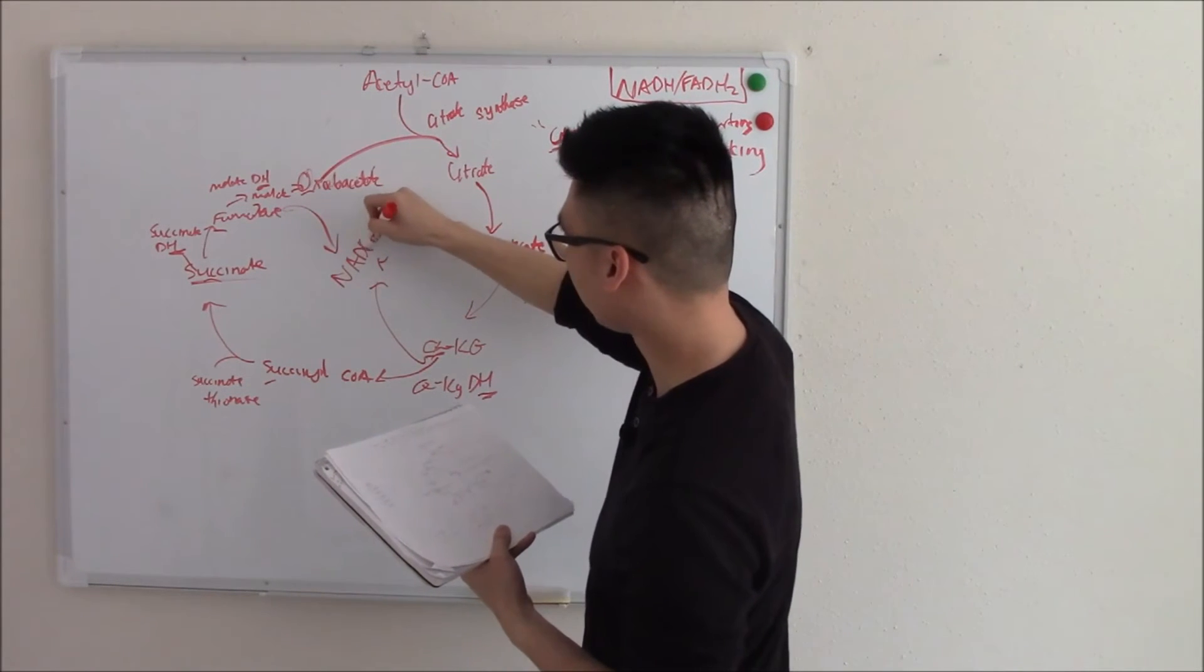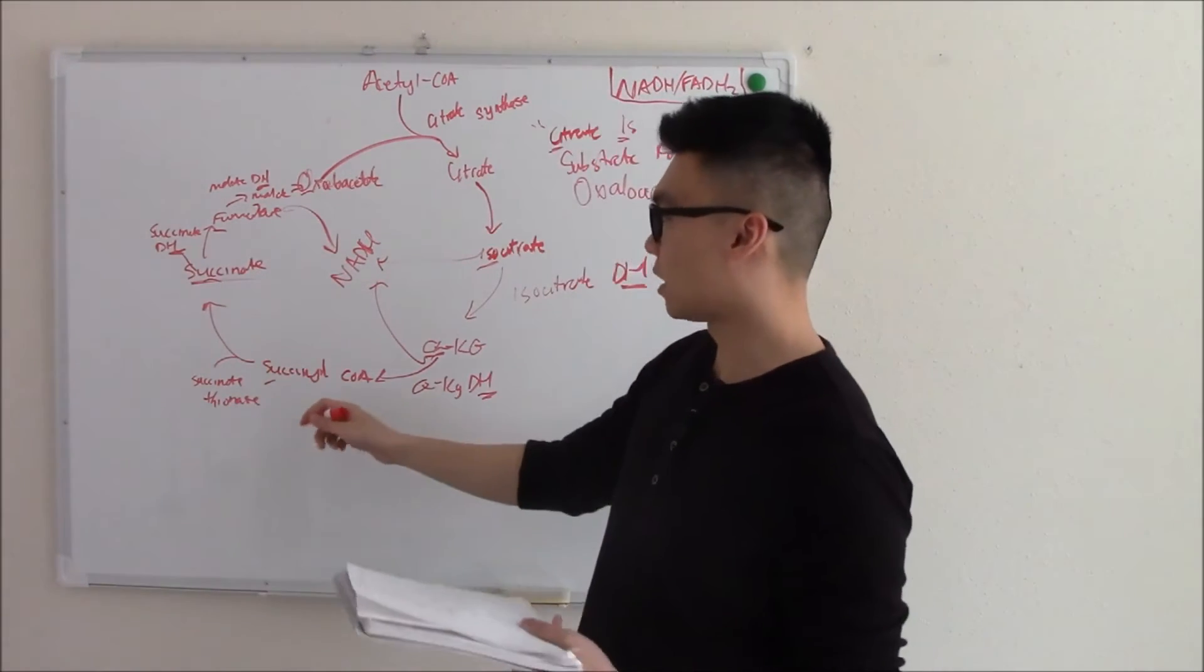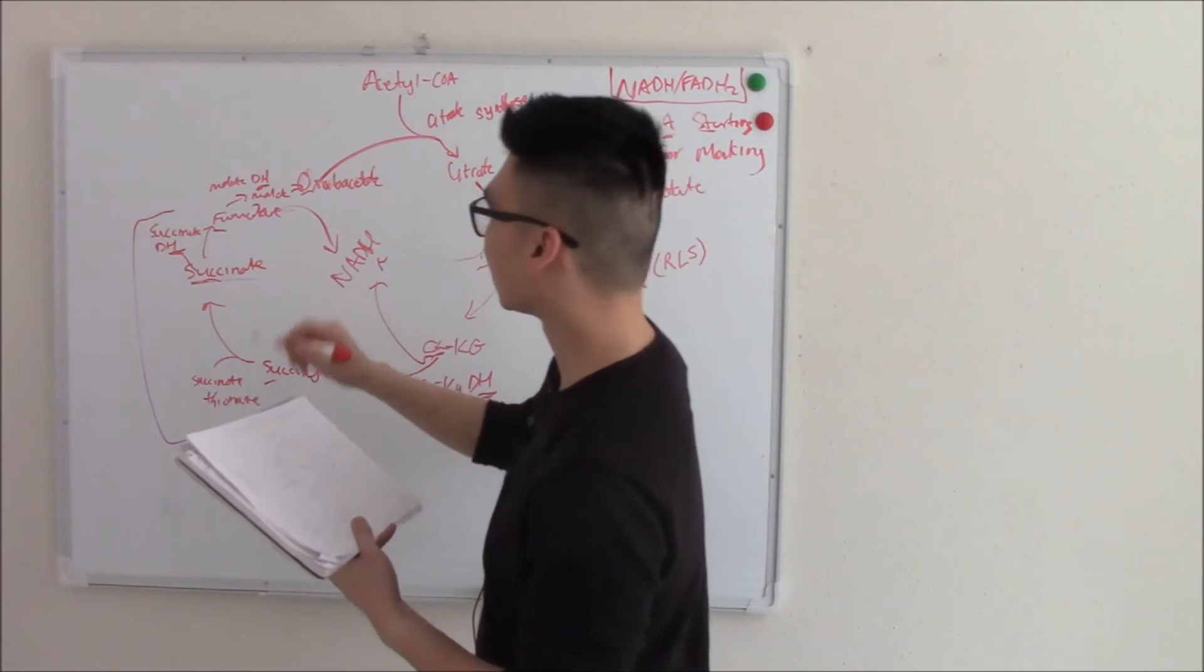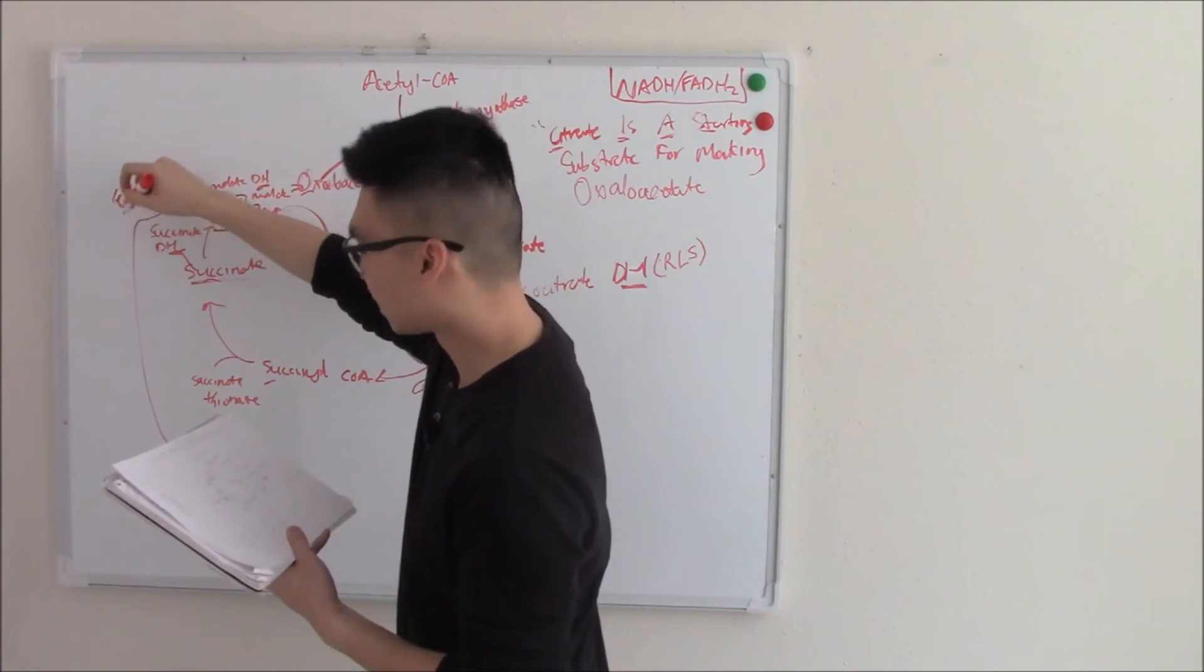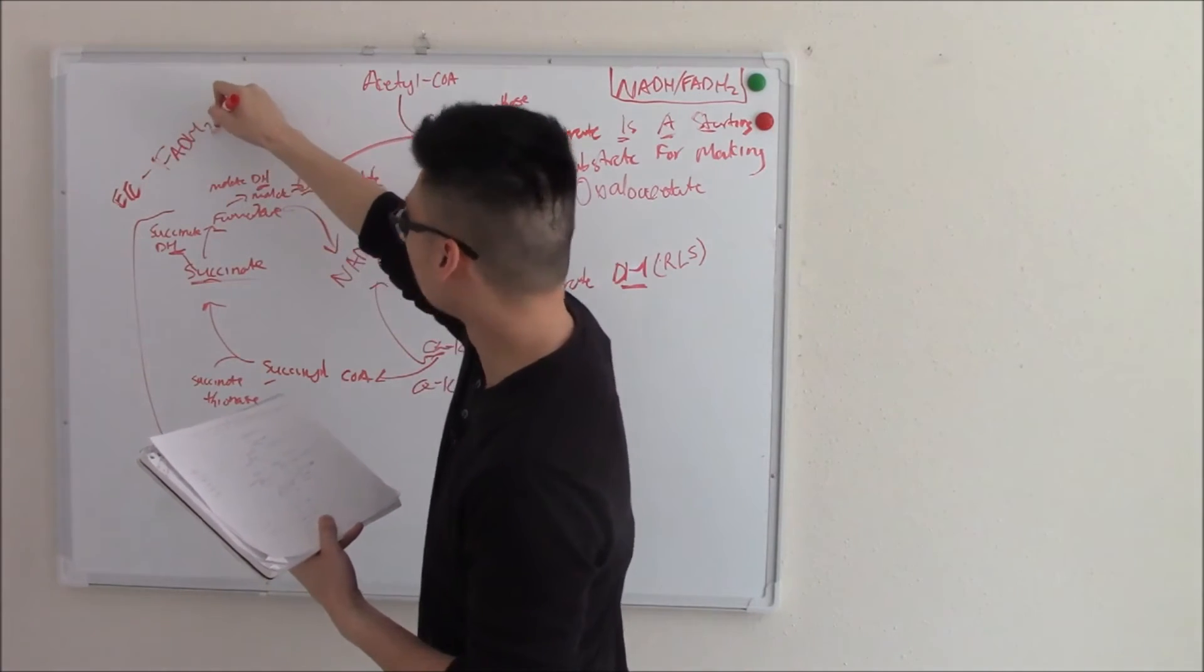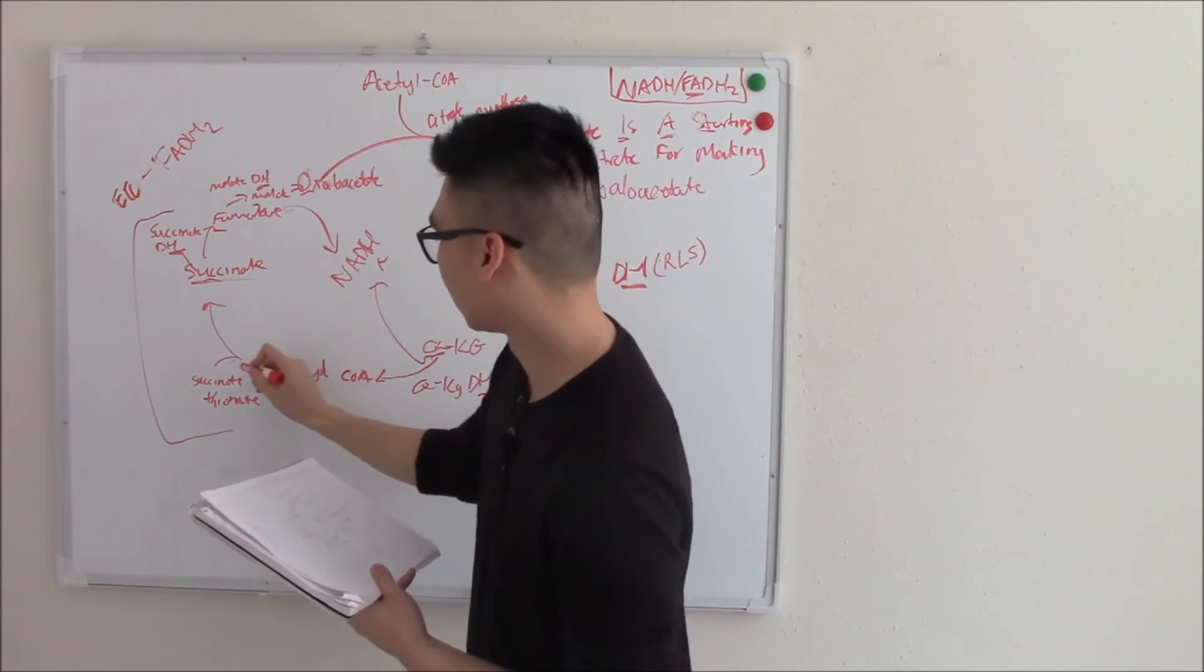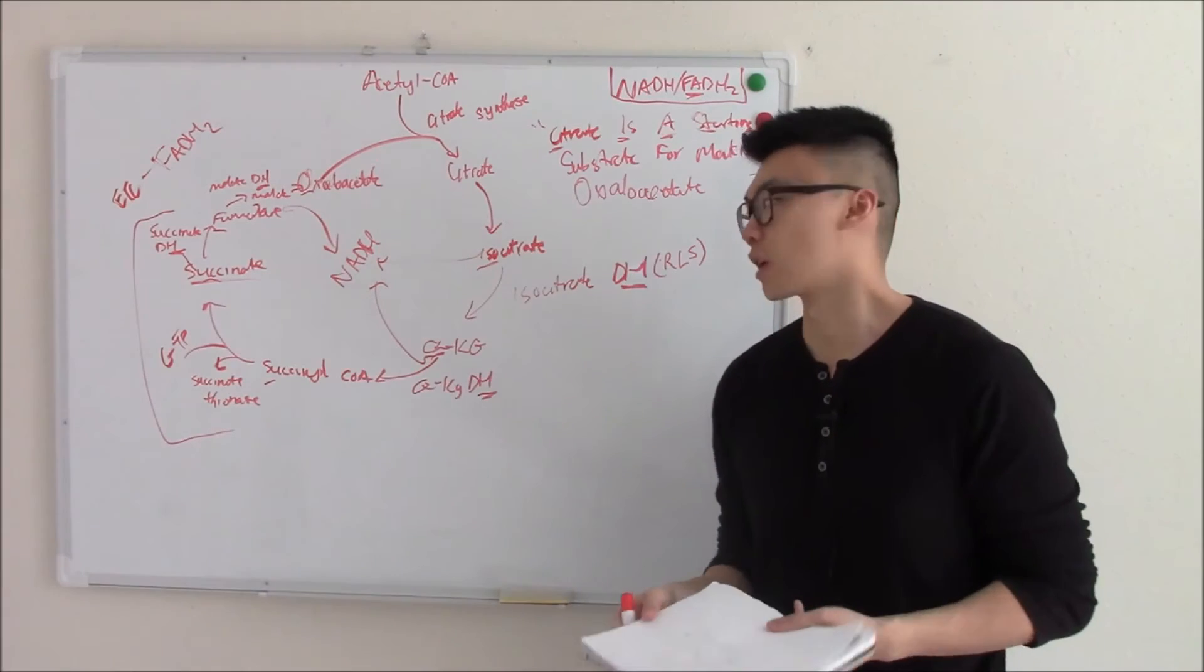Succinate dehydrogenase and succinate thiokinase - anything that ends in succinate, they're a little bit different, they're a little bit more unique. Succinate dehydrogenase is actually part of the ETC cycle and it makes FADH2. It's the only one that does that - important, remember that. Succinate thiokinase makes GTP.